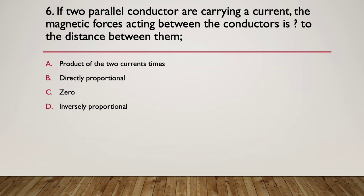Question six, if two parallel conductors are carrying a current, the magnetic forces acting between the conductors is what to the distance between them? A, the product of the two currents times. B, directly proportional. C, zero. Or D, inversely proportional. Pause here. Here's your hint. What happens to magnetic fields over a distance, irrespective of attraction or repulsion? What happens to the forces as you move the conductors further and further apart?